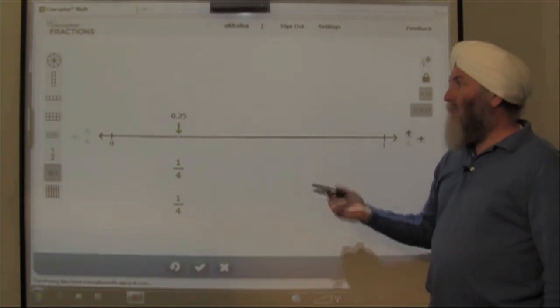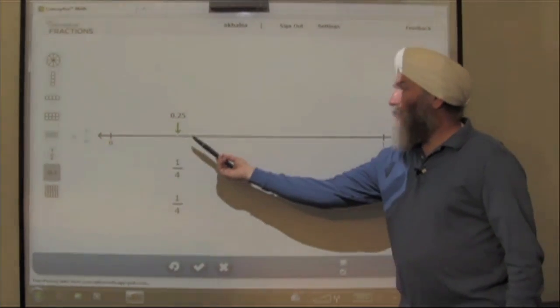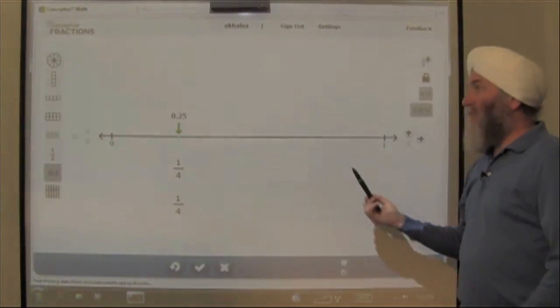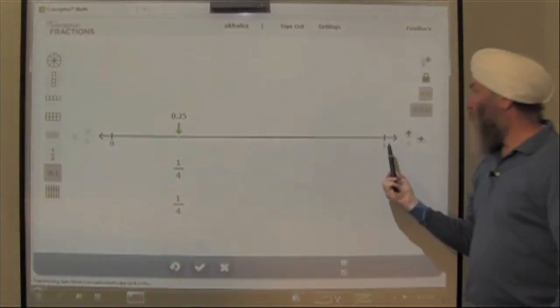1/4 and 0.25 mean the same thing. This 0.25 shows us 1/4 of the distance between 0 and 1 on this number line.